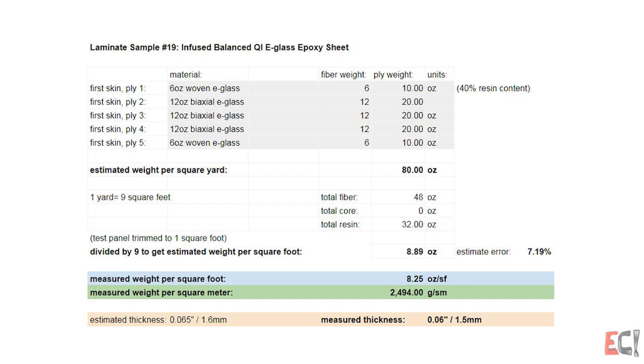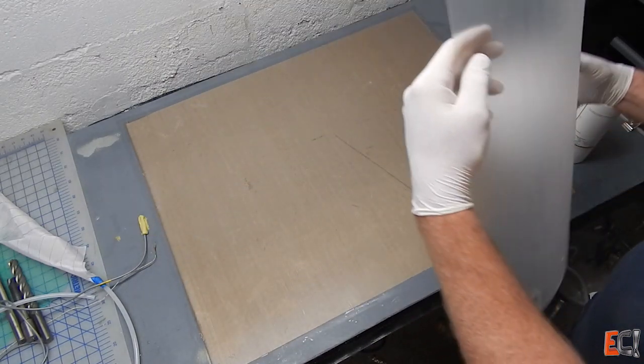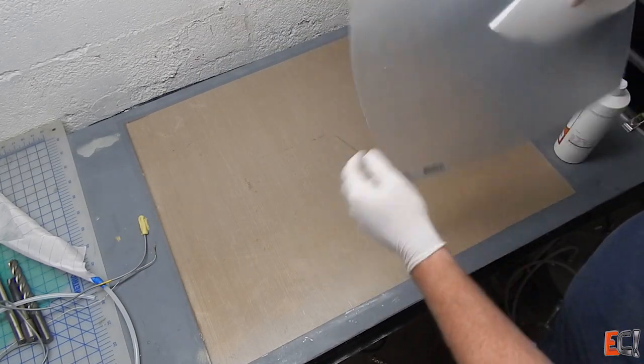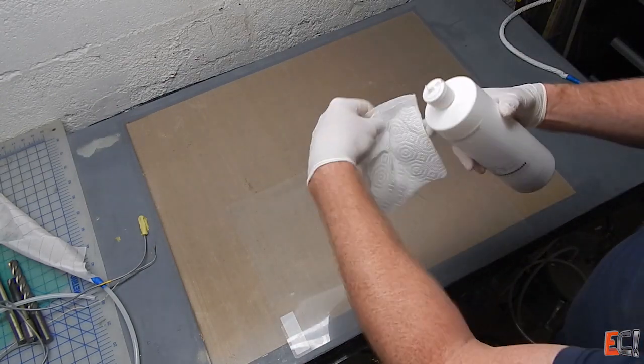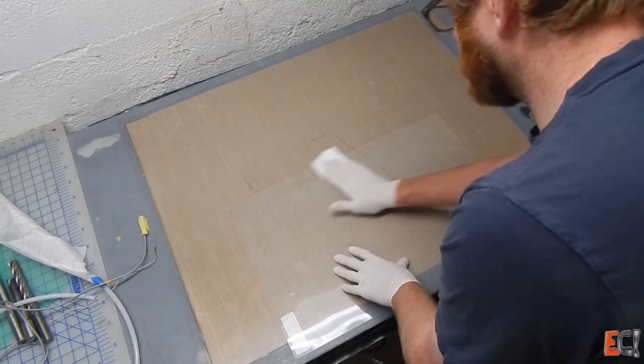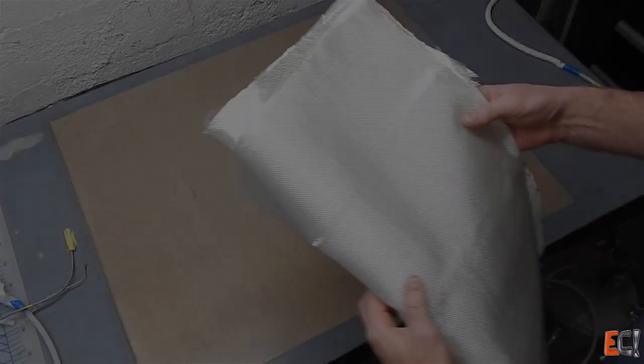Just means it's symmetrical about the middle and roughly all the fiber is pointing in equal amounts in each direction. And this is also part of a test on infusion flow, but I'm using it as a laminate sample too because it's a nice example of a typical type of thin plate.